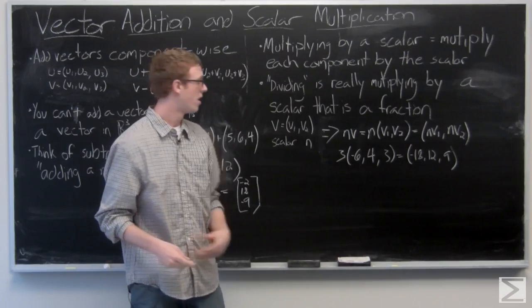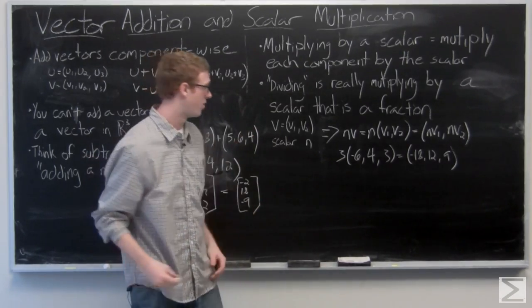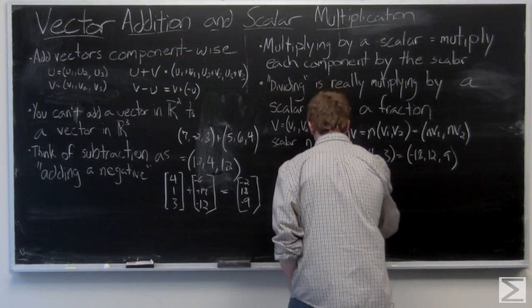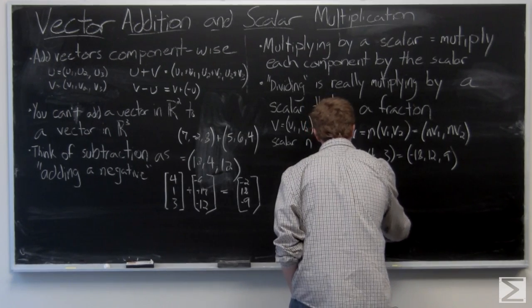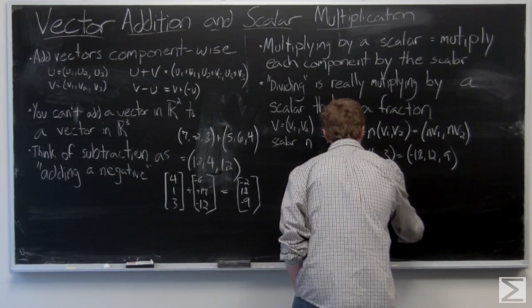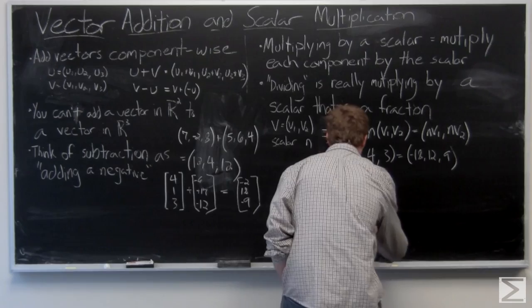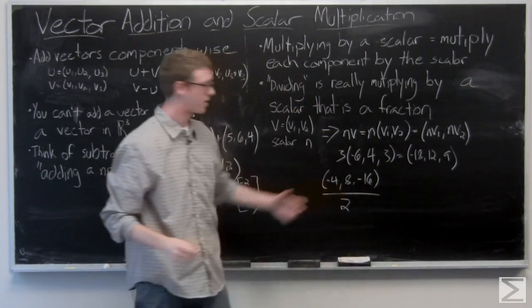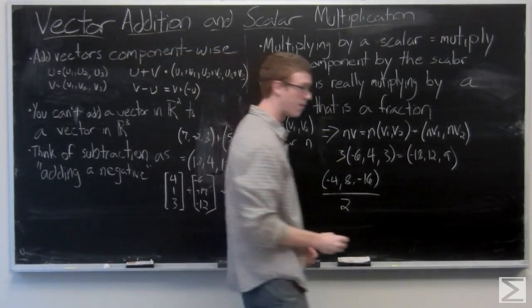And now we can look at a quick example of what it would be to divide. The vector negative 4, 8, negative 16 divided by 2.